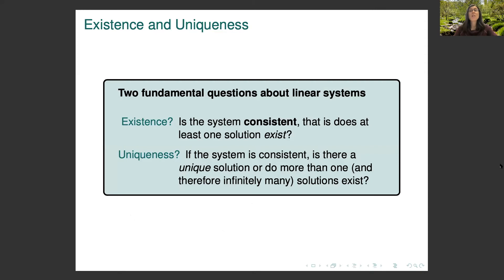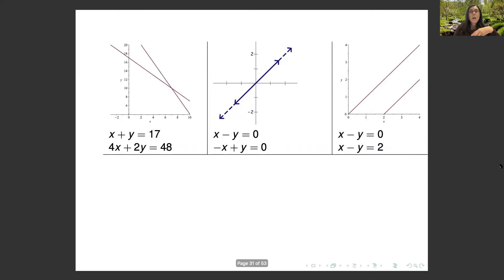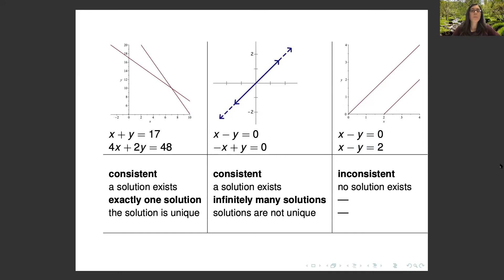Two fundamental questions we ask about linear systems throughout the entire semester are: existence — is the system consistent? Consistent means there is at least one solution, either unique or infinitely many. No solution is called inconsistent. And if a system is consistent, is the solution unique or are there infinitely many? Looking back at our examples: Dr. Granville's problem is a consistent system with a unique solution; two coincident lines give a consistent system with infinitely many solutions; and two parallel non-coincident lines give an inconsistent system with no solution.